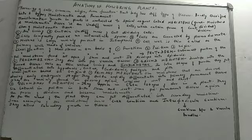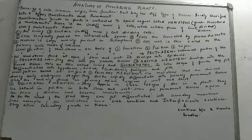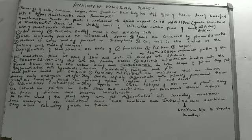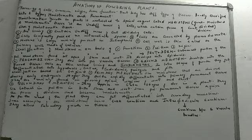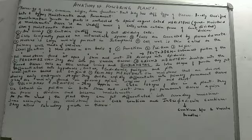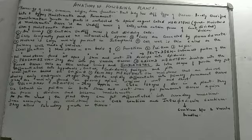The third and last kind of meristem on the basis of function is ground meristem, which develops into the ground tissue. The cells of ground meristem are thin-walled, living, and isodiametric — meaning all cells have almost the same diameter, roughly spherical and equal in size. In later stages of growth, the ground meristem differentiates into the hypodermis, cortex, endodermis, pericycle, and pith.